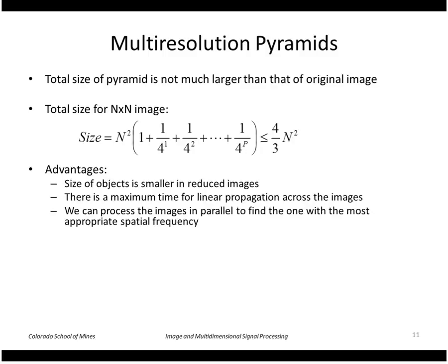So recall the original image was n by n, so n squared. The next level up is n over 2 by n over 2 or n squared over 4. The next level up is n over 4 times n over 4 or n squared over 16 and so forth. So this series adds up to, in the limit, 4 thirds.